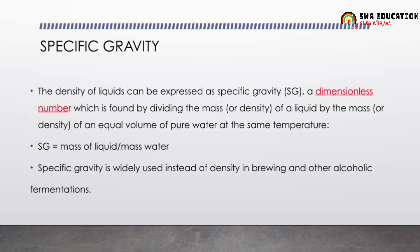Specific gravity is a dimensionless number — you should be very careful about that. The density of liquids is expressed as specific gravity. Specific gravity equals the mass of liquid divided by the mass of water. Specific gravity is widely used in brewing and other alcoholic fermentations.